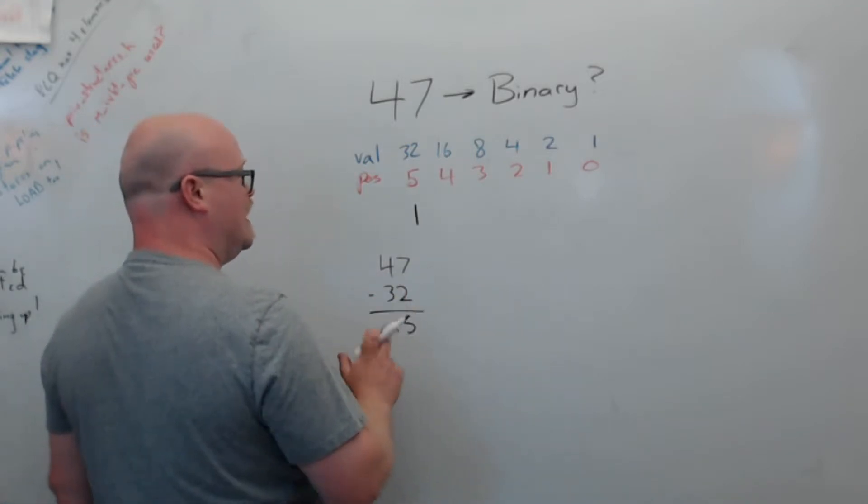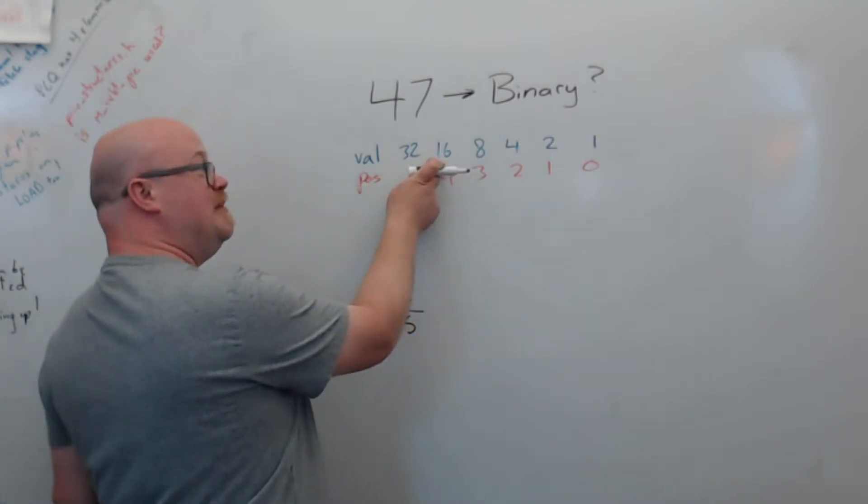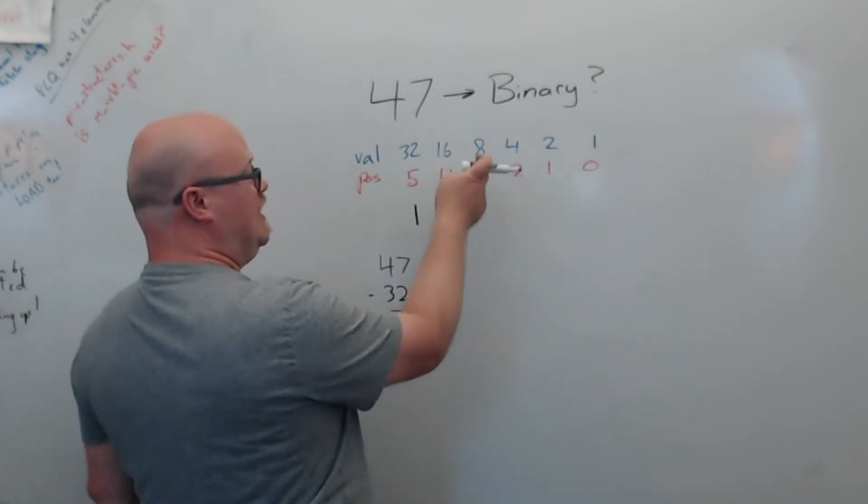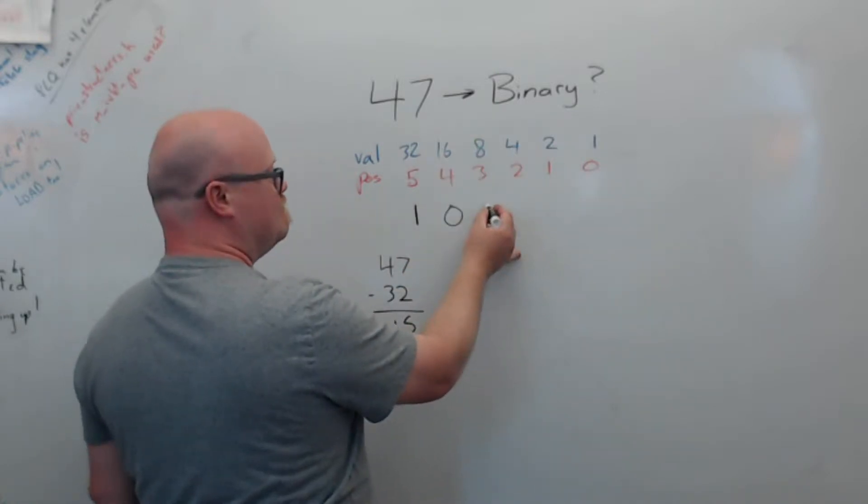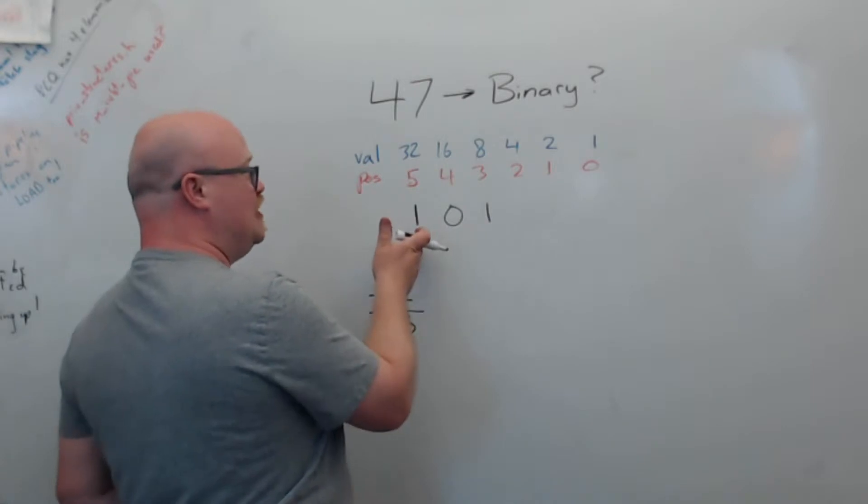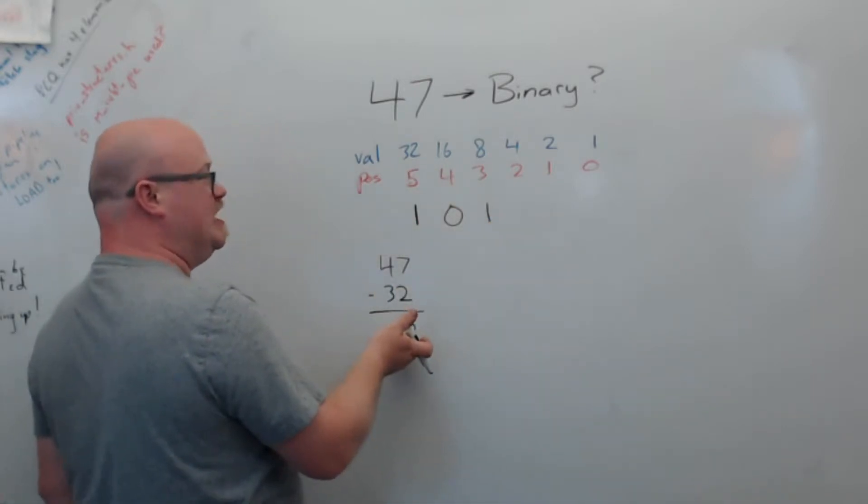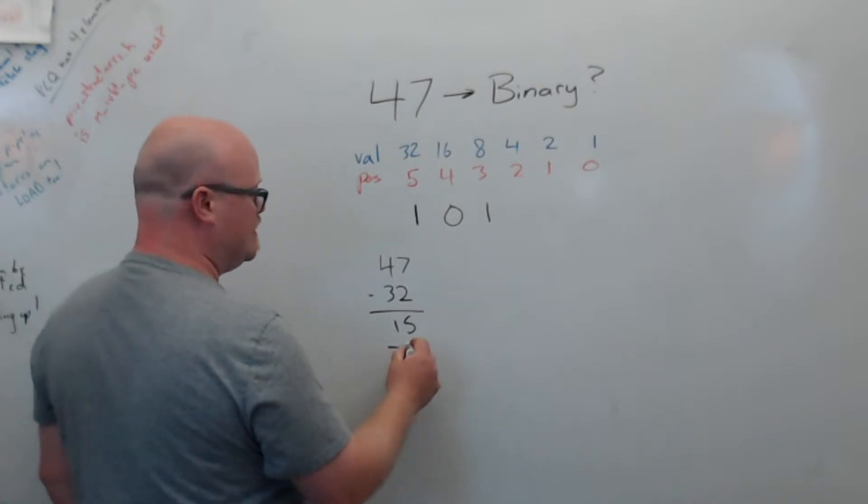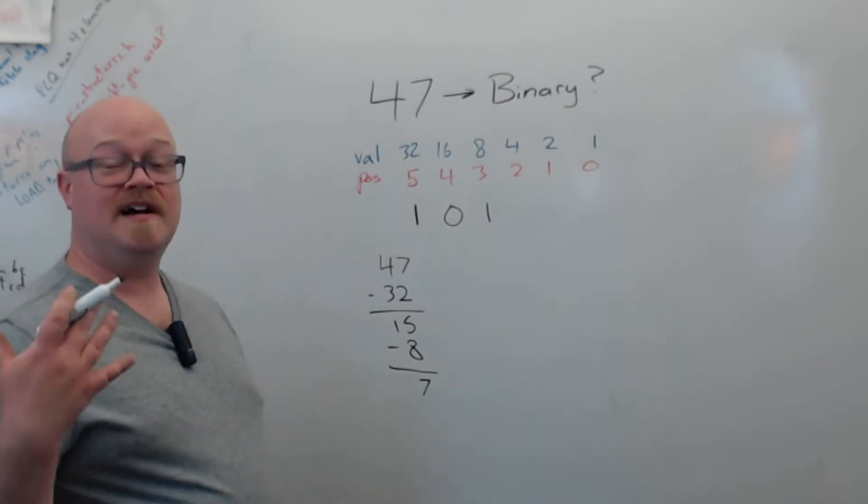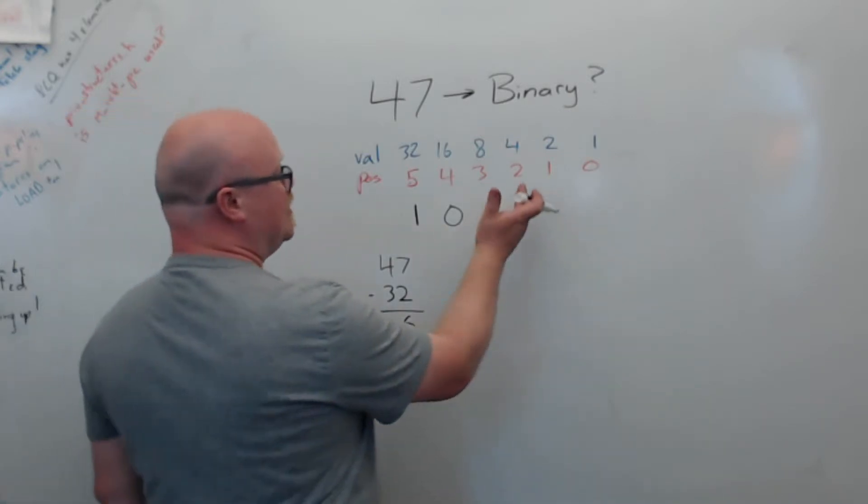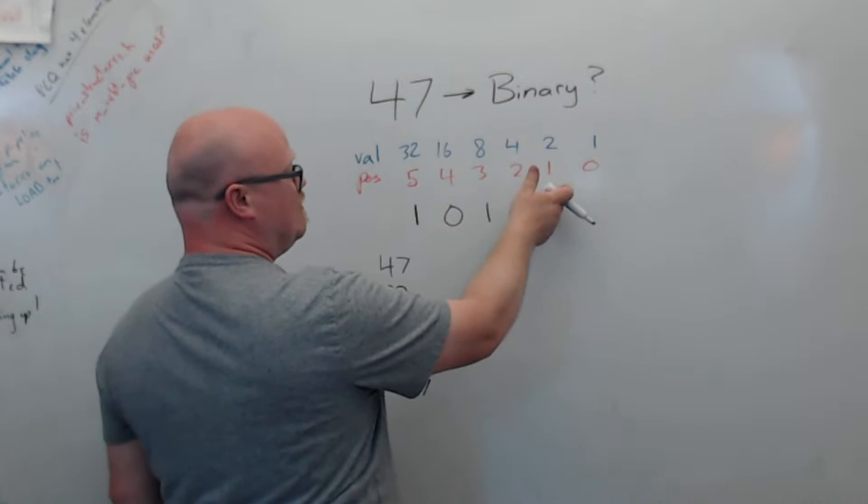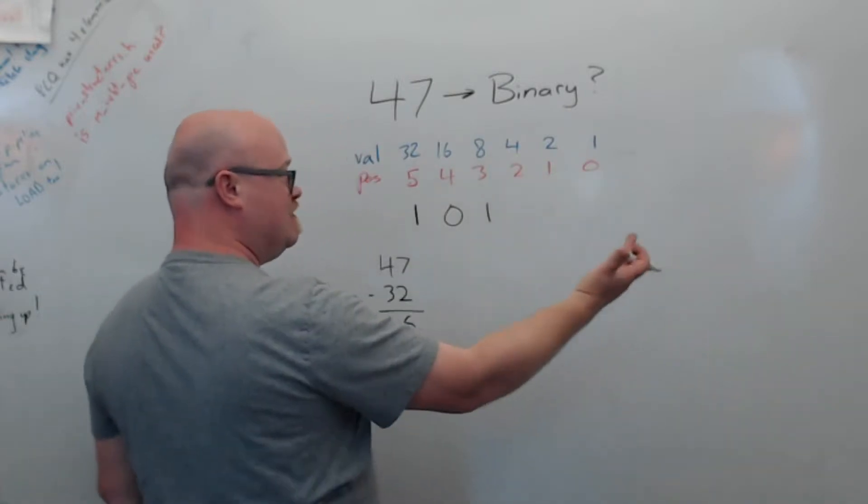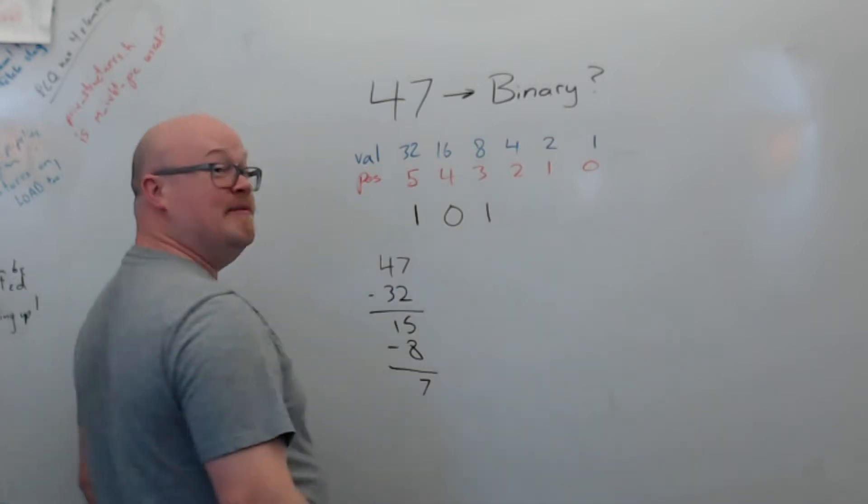So now I know that I have 47 minus 32 left to figure out. So that's 15. So with the remaining bits from position 4 through 0, I need to come up with a binary for 15. So let me think through this. I need 15. Let me look at 16. 16 is bigger than 15, so I must have a 0 here. 8 is less than or equal to 15, and since it's the first one I've found, I'm going to put a 1 there. But because I've put a 1, I've now got 32 and I've got 8 more. So out of the 15 remaining, I just accounted for 8 of them. So if I subtract 8 from 15, I'll get 7.